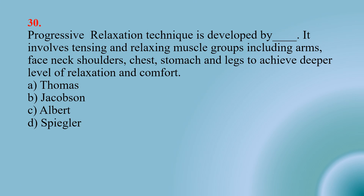Number thirty: Progressive relaxation technique is developed by Jacobson. It involves tensing and relaxing muscle groups including arms, face, neck, shoulders, chest, stomach, and legs to achieve a deeper level of relaxation and comfort — Option A: Thomas; Option B: Jacobson; Option C: Albert; Option D: Spiegler. The right option is B — Jacobson.